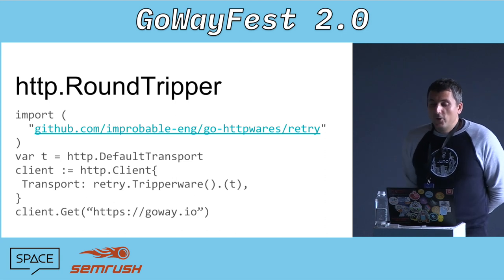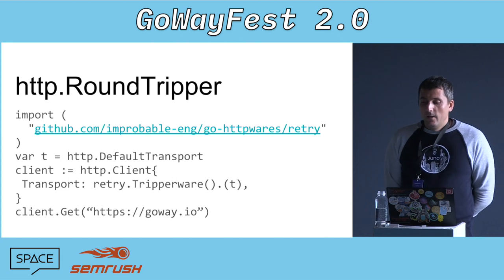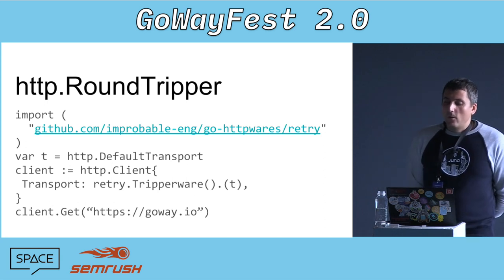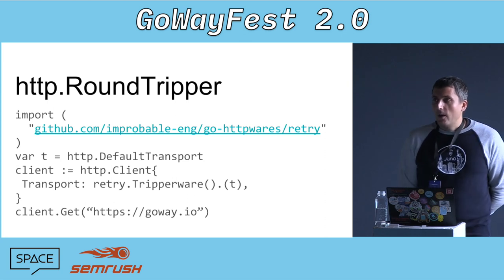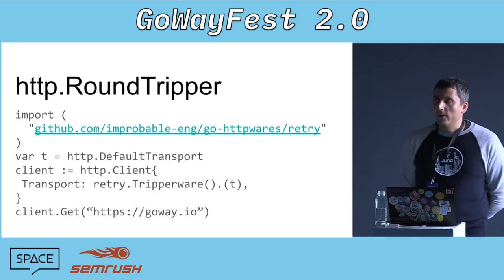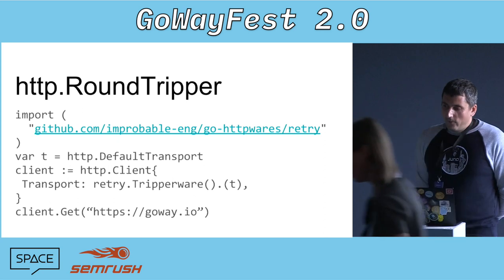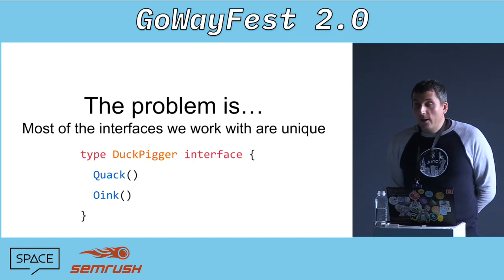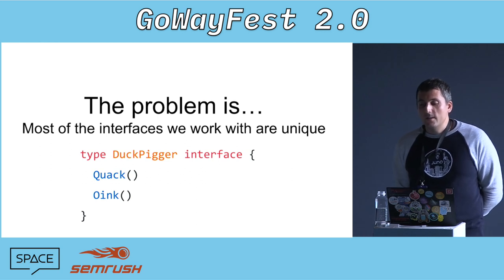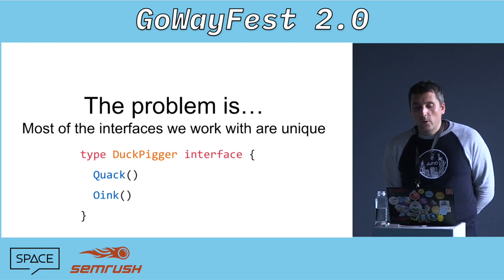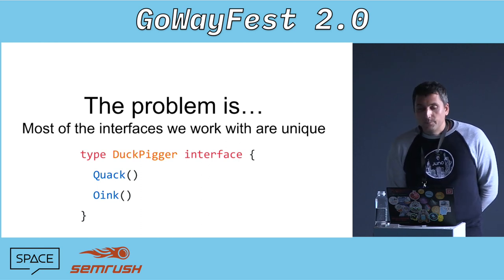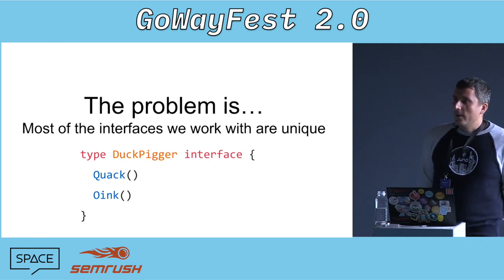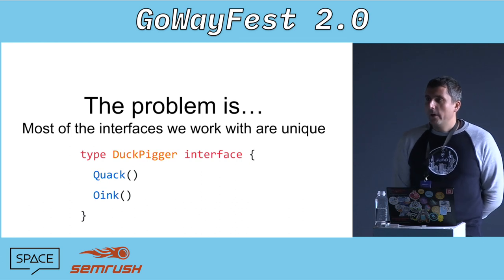We also have decorators for the HTTP RoundTripper interface, which is used in the HTTP client. For example, there is a nice package that provides some 'tripperware', as the author calls it — tripperware for logging, tracing, retries, and metrics. In general, we have our own middleware for the HTTP RoundTripper interface that we use for every integration with any third-party service. But the problem is that most of the interfaces we work with are unique, and we define these interfaces in our own code. There is definitely no middleware that we can share with each other.